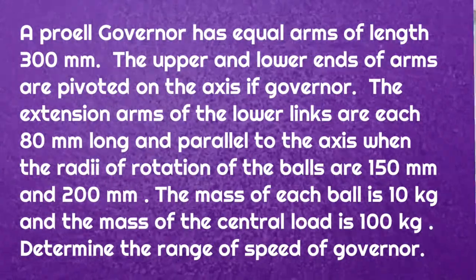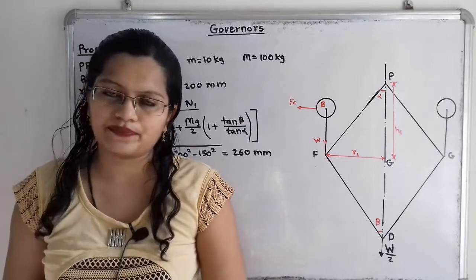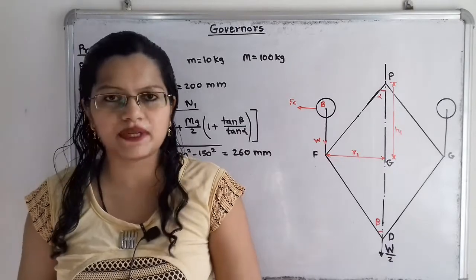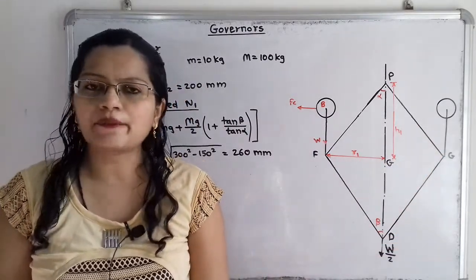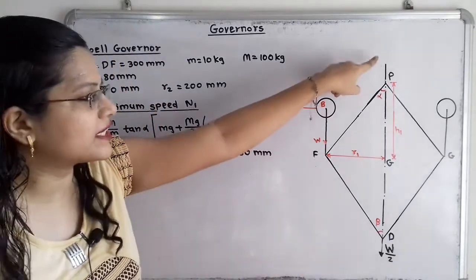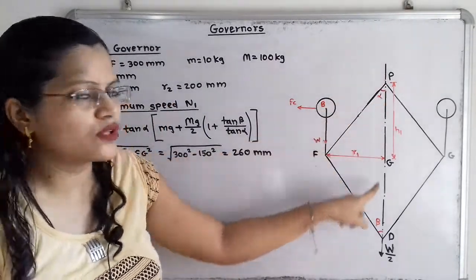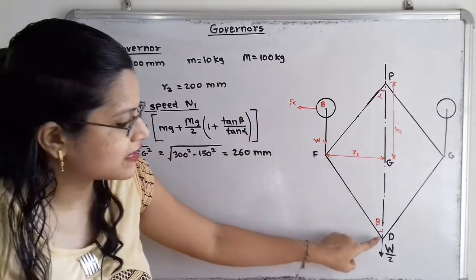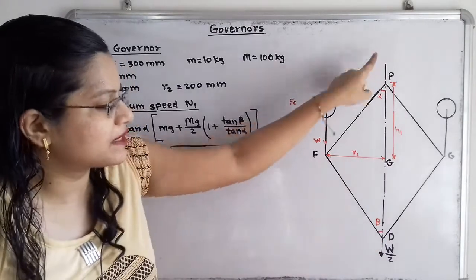Determine the range of speed of the Governor. Let us first understand how to draw the diagram as per the given data. The length of the arms is equal to 300 mm, so all arms are of equal length. The end points of the arm and link lie on the spindle axis. We draw a vertical dash-dot line as the axis of rotation — the spindle axis. Point P is the end of the arm and point D is the end of the link.